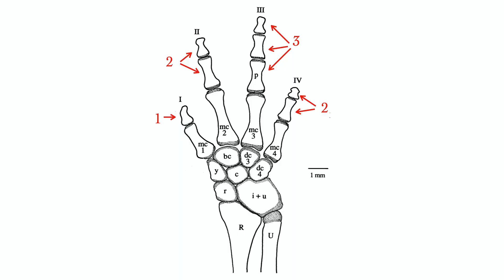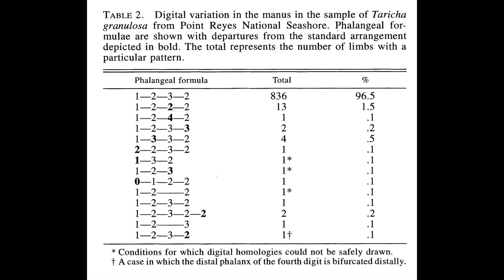We can also look at the details of specific variants. The hand of the animal has a specific pattern of one finger bone, then two, then three, then two — a 1-2-3-2 pattern. Just looking at that attribute, 96.5% have the 1-2-3-2 pattern. But 1.5% lose the third bone in the third digit, and 0.5% add an extra bone to the second digit. This is awesome information — to get an idea of the actual variation in morphology within a population.